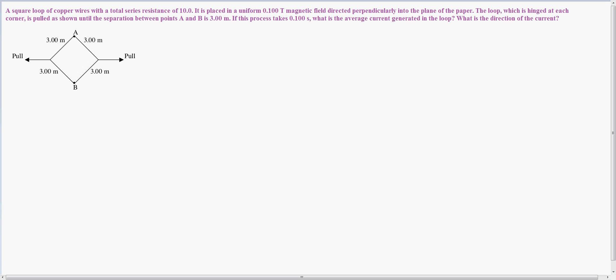It is placed in a uniform 1 tesla magnetic field directed perpendicularly into the paper. The loop which is hinged at each corner is pulled until the separation between the points A and B is 3 meters. If this process takes 1 tenth of a second, what is the average current generated by the loop? What is the direction of the current?